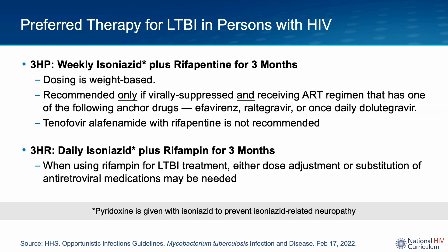Looking more closely at the weekly isoniazid plus rifapentine for three months (3-HP): the rifapentine dosing is weight-based and there are several drug interactions between rifapentine and antiretroviral drugs. This regimen is only recommended for patients who are virologically suppressed and receiving an antiretroviral combination anchored by either efavirenz, dolutegravir, or raltegravir. Also, tenofovir alafenamide (TAF) cannot be used with rifapentine due to drug interactions. This is important because TAF is found in many single-tablet fixed-dose combination regimens — for example, bictegravir/TAF/FTC cannot be used concomitantly with rifapentine.